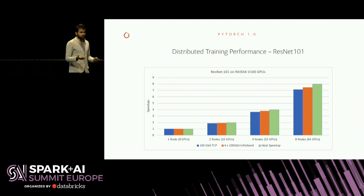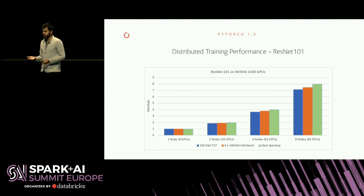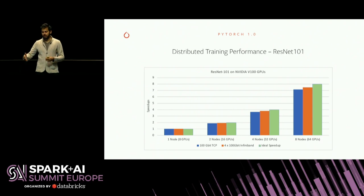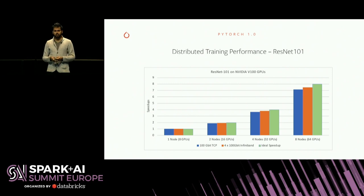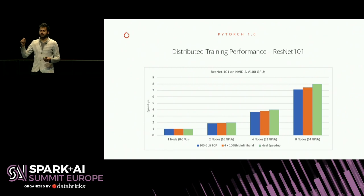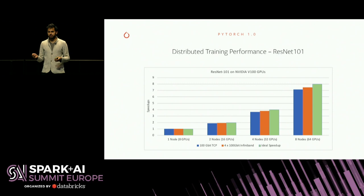PyTorch is highly scalable. Here's an example with ImageNet training — building a vision model to classify categories based on the input image, like classifying a cat image. The graphs show how many nodes the model is running on. The leftmost runs on 8 nodes and 64 GPUs. The green bar is the theoretical peak — the maximum speed if you linearly scale training with zero communication cost. We're pretty close to that green bar on both InfiniBand-based clusters and Ethernet-based clusters. We also have NLP examples that achieve close to peak performance.